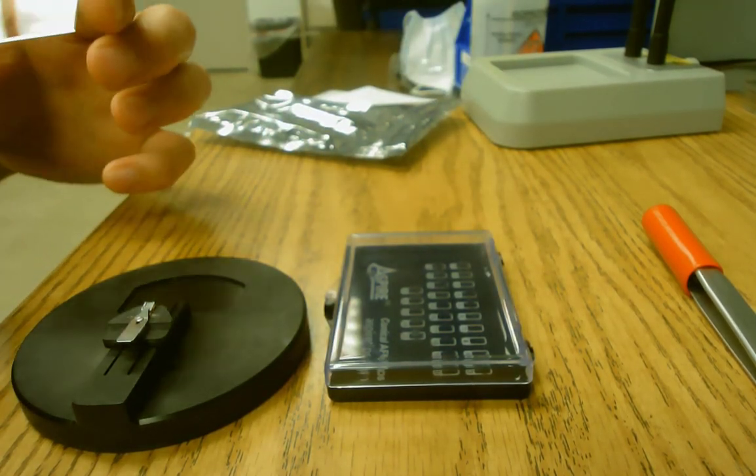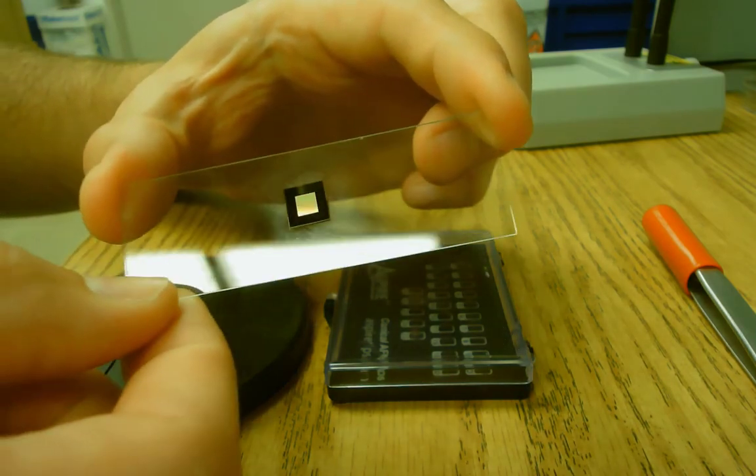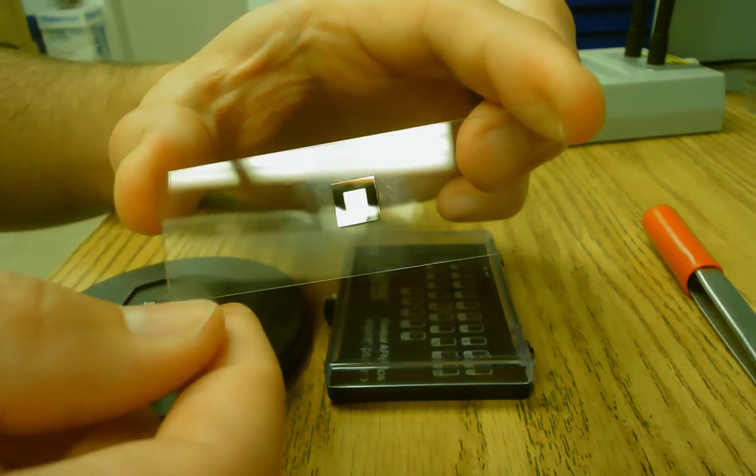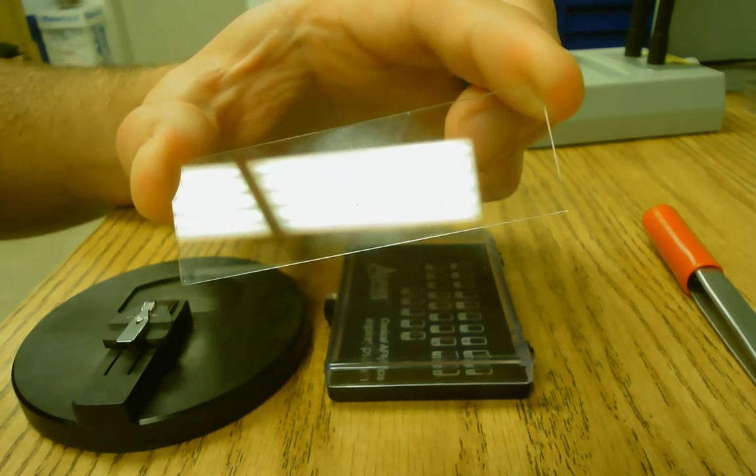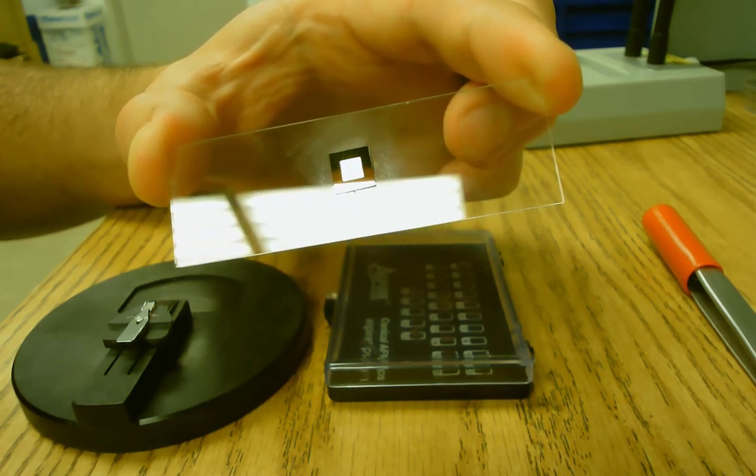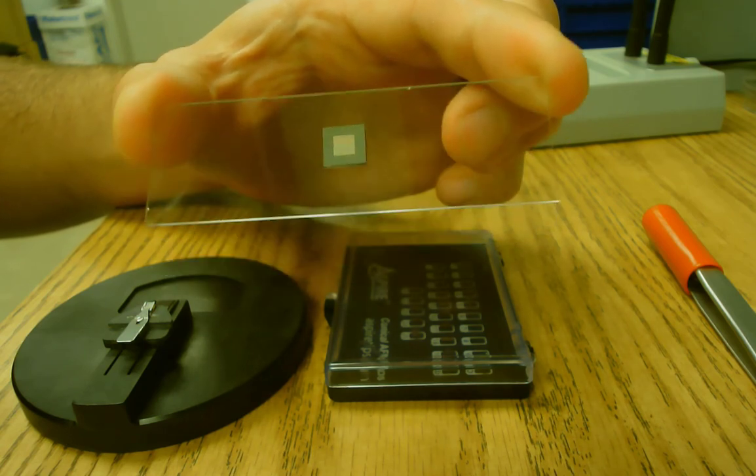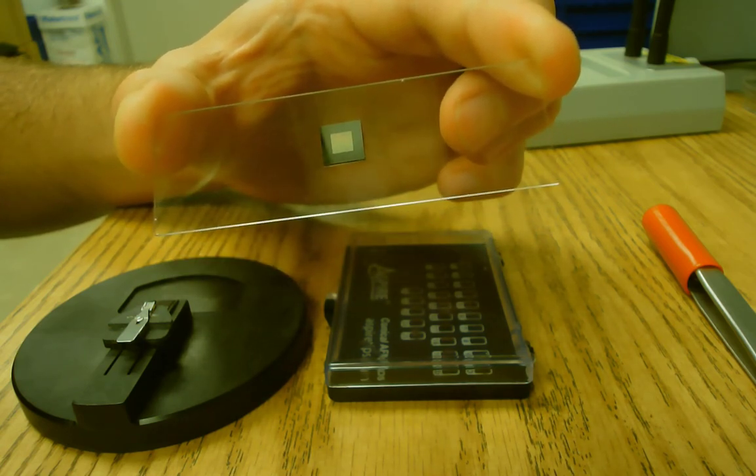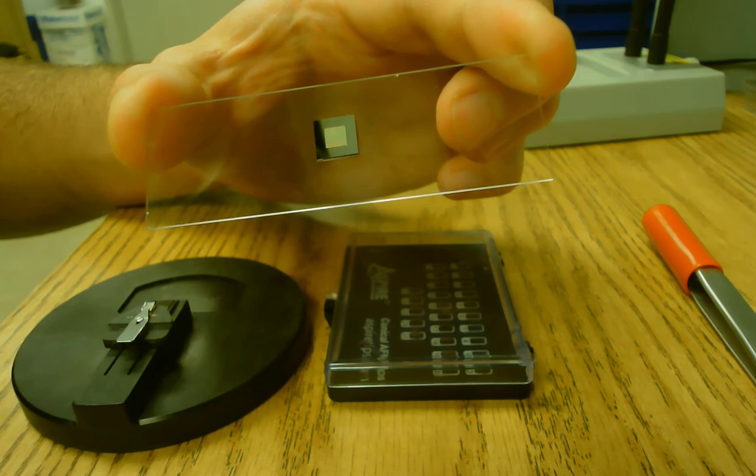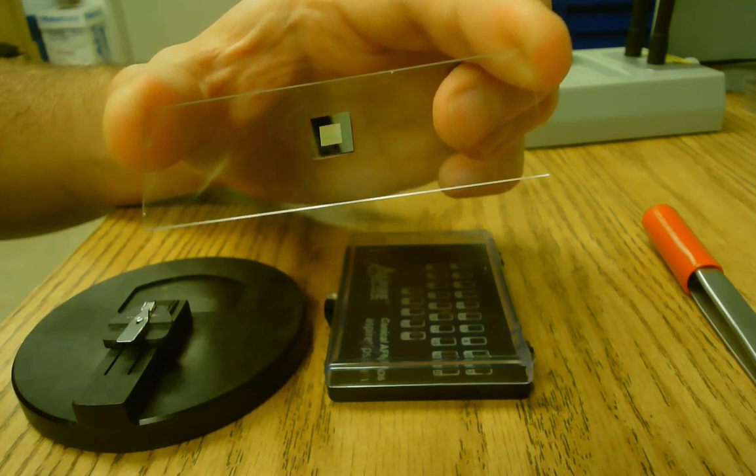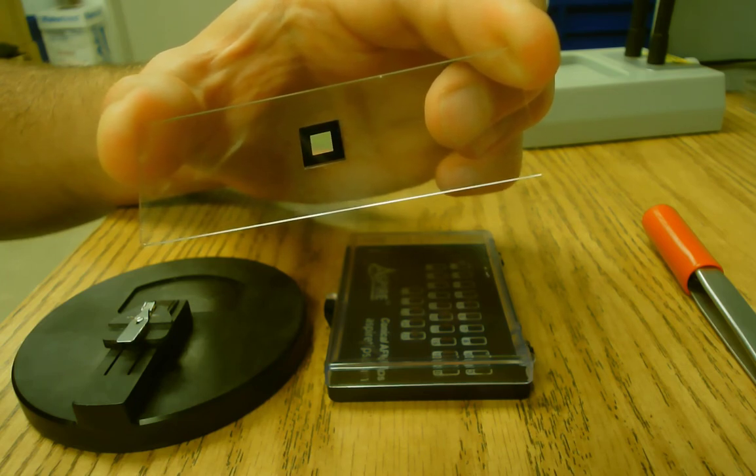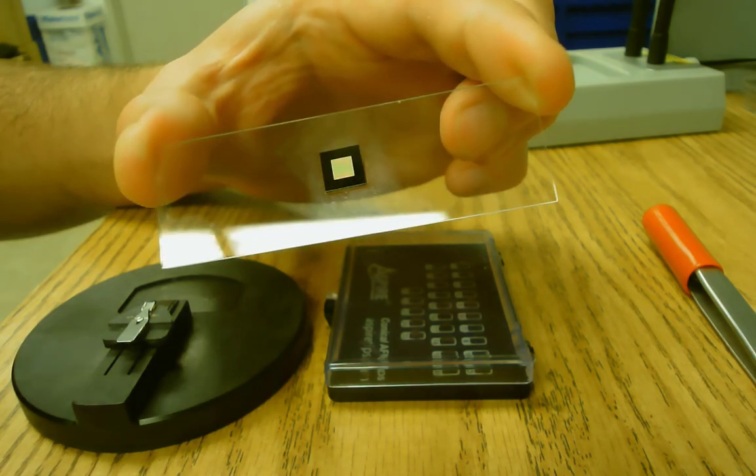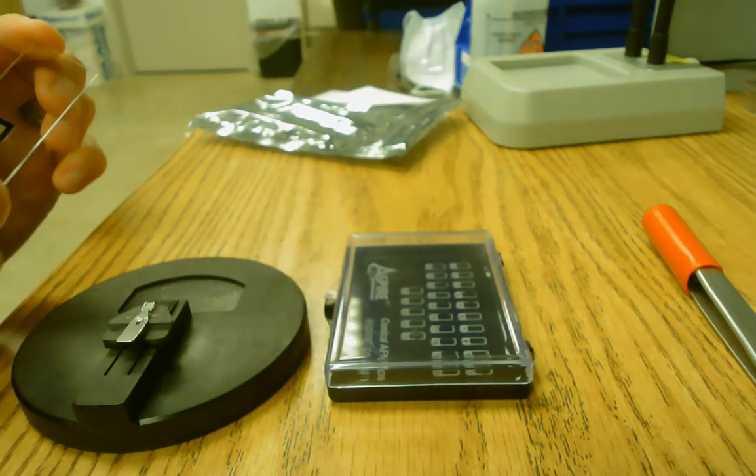We're going to image two different things. One of them is a standard. So this is an x, y, and z standard. It has a grid of square pits. So the pits are square and have a depth of 180 nanometers and a pitch of 10 micrometers. So the pitch is the distance between one edge of a square to the same edge of the next square. So we're going to image this as an example.